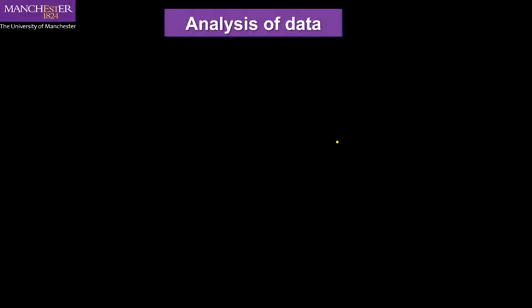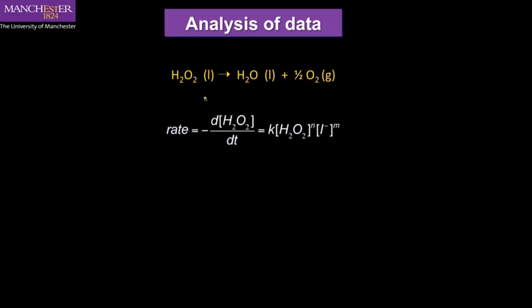So we have all our data, now we need to analyze it. Here's the reaction which we've been looking at, the decomposition of hydrogen peroxide. Now, if we go back to some of our first lectures, we can write out a rate for this process in terms of the decomposition or disappearance of the hydrogen peroxide. So the rate is minus, because it's disappearing, the rate of change of concentration of hydrogen peroxide with time.